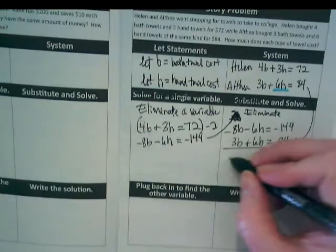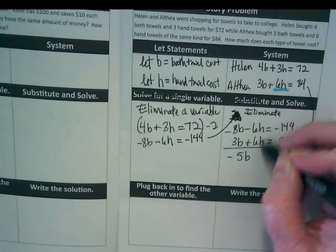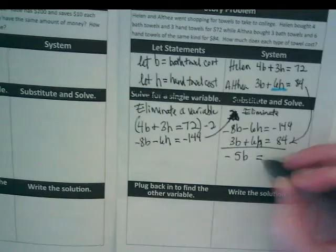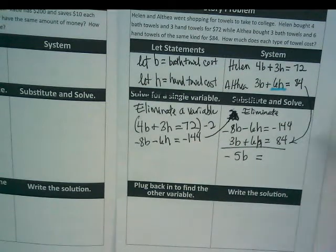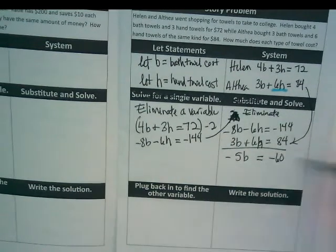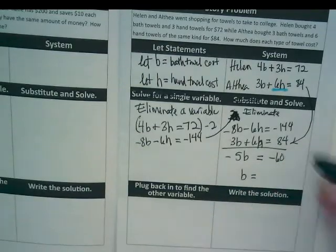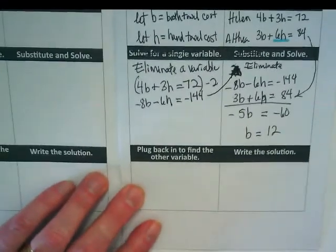And I'm going to add those together. Negative 8b and 3b is going to be negative 5b. Negative 6h and positive 6h? They're eliminated. It's a 0. Equals negative 144 and positive 84? It's negative 60. When I divide both sides by negative 5, b equals 12. That's half my solution.